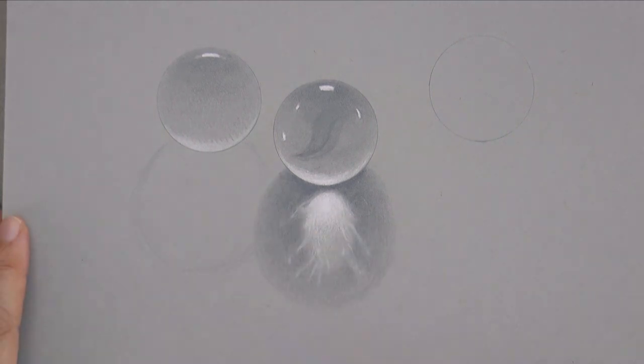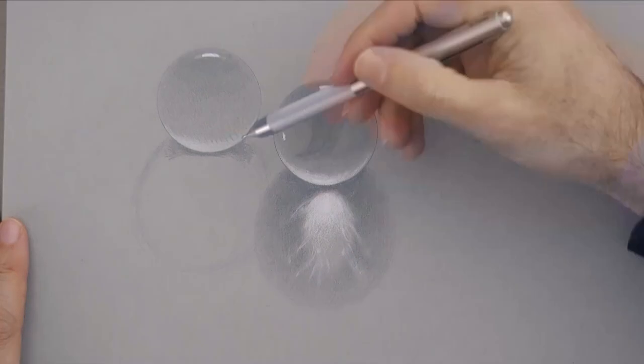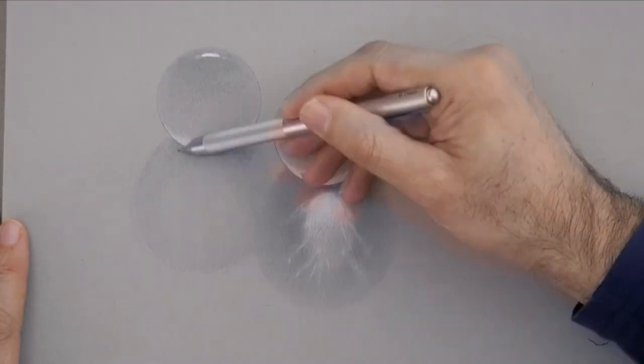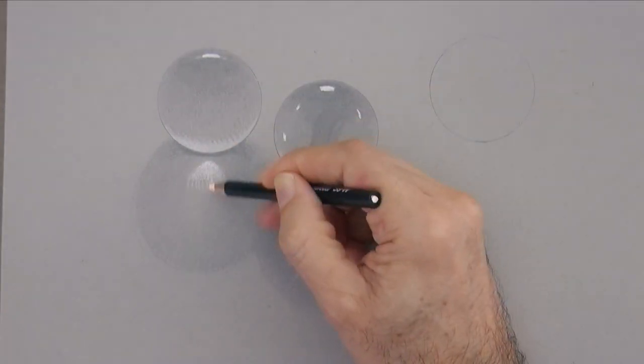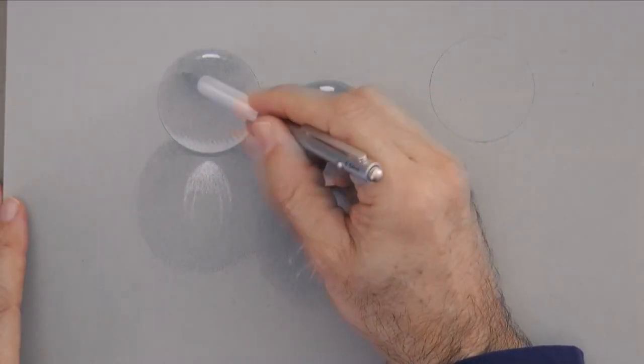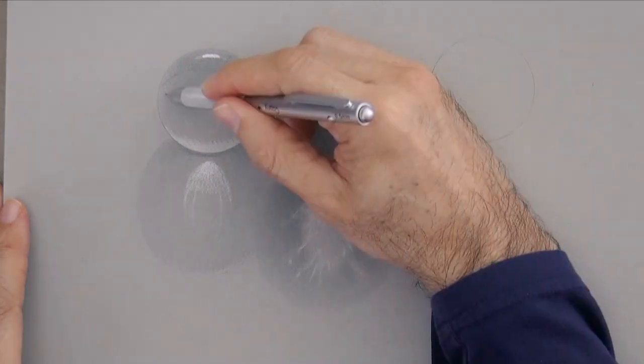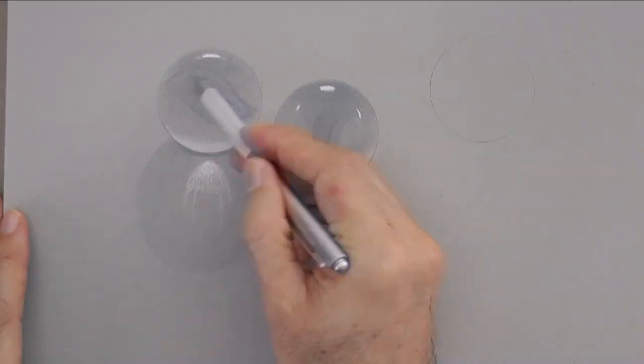Of course I can use the white pencil like this for the lights, because I am drawing on toned paper. If I were drawing on white paper, I would leave that white for the lighter values. Inside let's draw a different shape, and in a different direction.